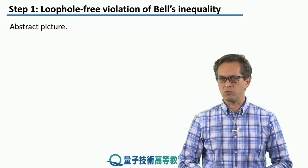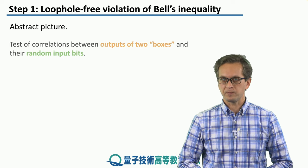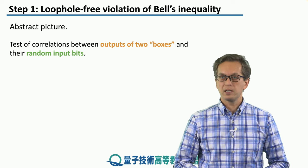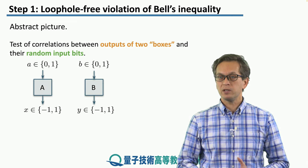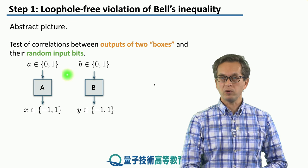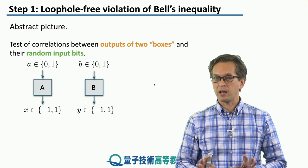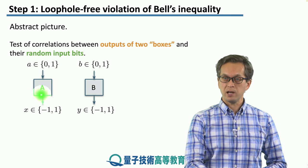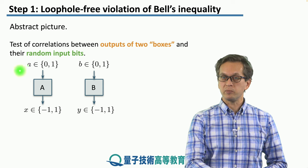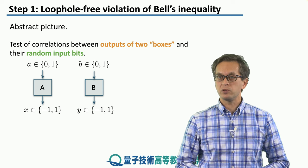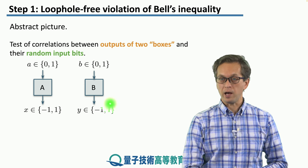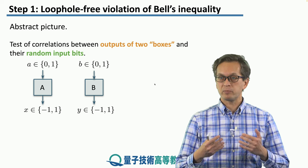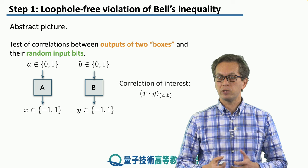So what is a Bell inequality? We're going to start with an abstract picture. Bell inequality is a test of correlations between the outputs of two boxes and their random input bits. We have box A and box B. What these boxes are and how they work is not important. What's important is that if we provide input A to box A and input B to box B, where these inputs are classical bits, then the boxes will produce an output X and Y. The values of the outputs can be plus one or minus one. We're going to repeat this procedure many times and get the statistics in order to estimate the correlation.